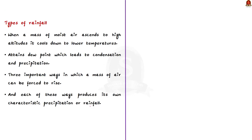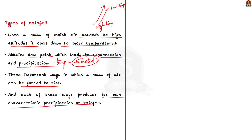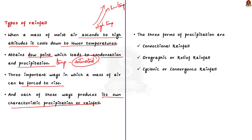Now we will see the types of rainfall in detail. When a mass of moist air ascends to high altitudes, it cools down and attains the dew point — the temperature to which air must be cooled to become saturated with water vapour — which leads to condensation and precipitation. There are three important ways a mass of air can be forced to rise, each producing its own characteristic rainfall: convectional rainfall, orographic rainfall, or cyclonic rainfall.